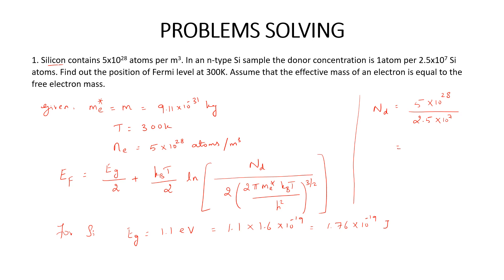So if you calculate that, you get 2 into 10 power 21 atoms per meter cube — that is the donor concentration. Now looking at the formula again: EG is known, KB is constant, T is given, Nt is found. In the denominator, 2π × Me* — Me* is given as free electron mass. KB is constant, T is given, H is constant. So everything is known.